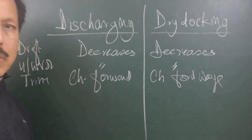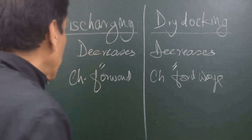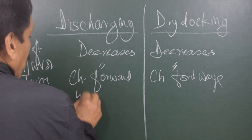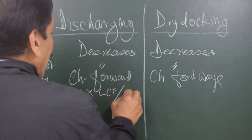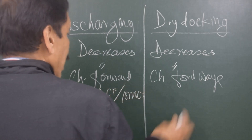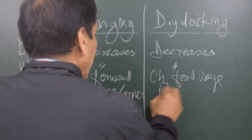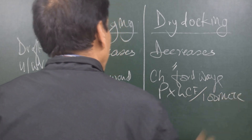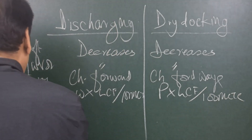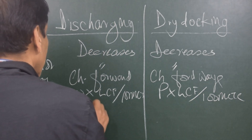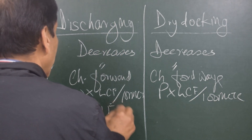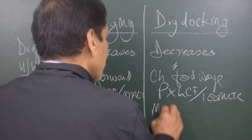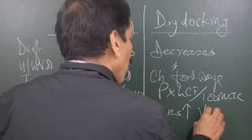These are the absolute similarities in the two processes. The trim change formulae are also similar: trim change in discharging is W × LCF ÷ (100 × MCTC), and in dry docking it is P × LCF ÷ (100 × MCTC). Regarding center of gravity: in discharging, G moves forward and upwards; in dry docking, G moves upwards but only virtually.